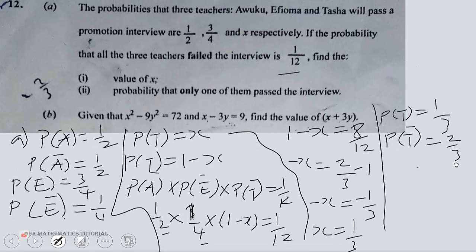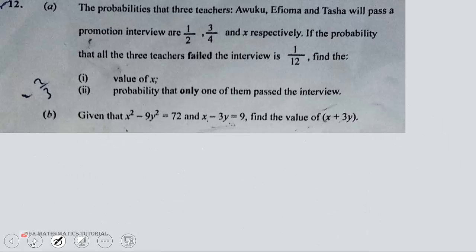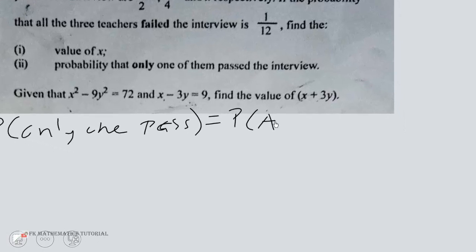Now you're supposed to find probability that only one of them pass. So probability that only one of them pass will be probability of A failed,